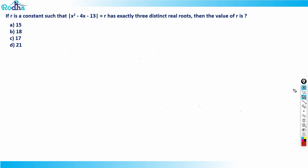Hi guys, let's look at this next question from CAT 2021 Slot 1. This question is from algebra — a modulus concept, a bit tricky one. This kind of question we have covered in class, where we solve it by making a perfect square.